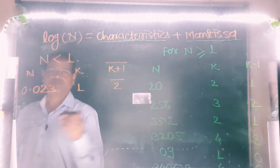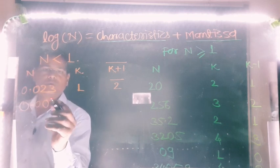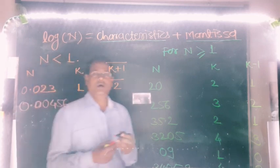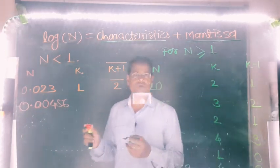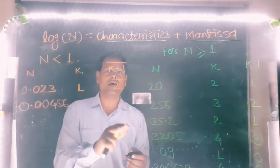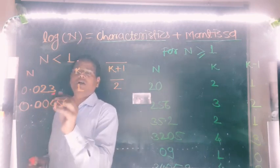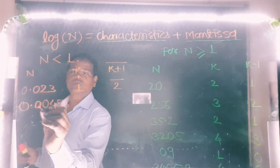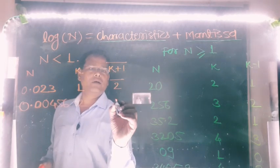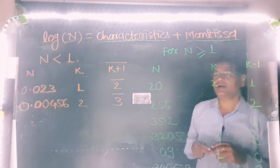Next example: 0.00456. Count the number of zeros after the decimal point until any number between 1 and 9 occurs. Here 4 is the first such digit, and before 4 there are 2 zeros after the decimal point. So k equals 2, plus 1 equals 3, place a bar on its head — characteristics of this number is bar 3.